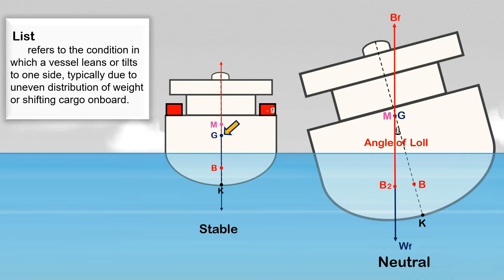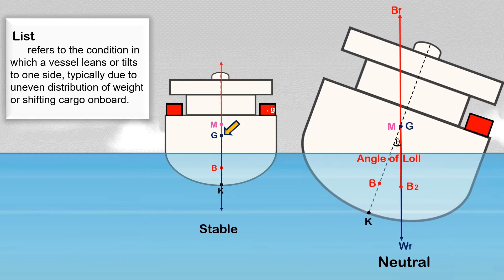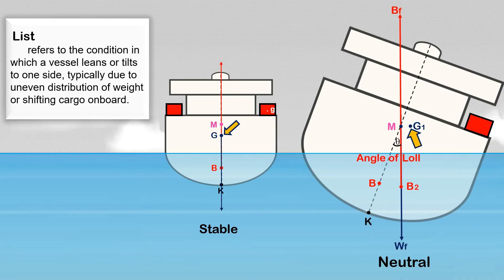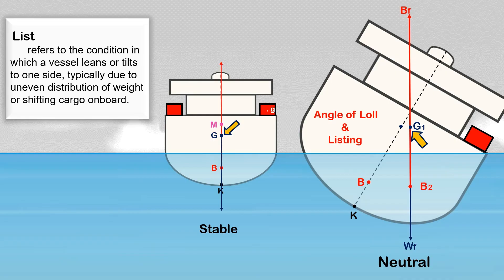Adding weight on the high side when the ship is at angle of loll will worsen the situation. For example, if we add weight on the high side and she heels to the other side, she should normally rest at the angle of loll — but since weight was added on that side, the new position of the ship's center of gravity will be off the centerline, causing the ship to heel further. Now you have two serious problems: the angle of loll still exists, and at the same time the ship's center of gravity is off the centerline.